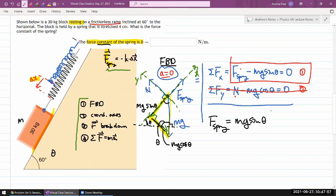Now the question doesn't ask for spring force, it asks for the force constant. So spring force is mg sine theta, so the constant itself should be k equals mg sine theta divided by delta x.